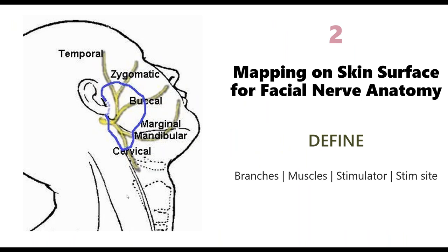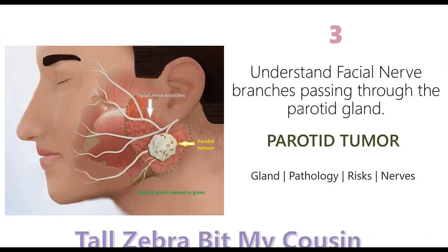Before incision, a handheld stimulator is given to the surgeon to stimulate the nerve on the skin using slightly higher stimulation to map out the branches of the facial nerve: the temporal, zygomatic, buccal, marginal mandibular, and cervical branches. These five branches are marked on the skin so the surgeon already knows where they are when the incision begins. During resection, stimulation is performed proximal and distal to the nerve.